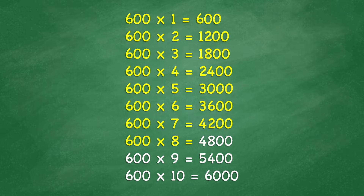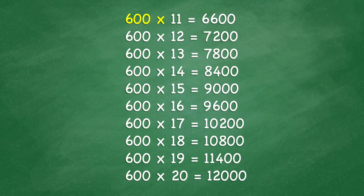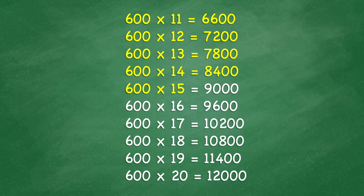600 times 8 equals 4,800. 600 times 9 equals 5,400. 600 times 10 equals 6,000. 600 times 11 equals 6,600. 600 times 12 equals 7,200. 600 times 13 equals 7,800. 600 times 14 equals 8,400. 600 times 15 equals 9,000.